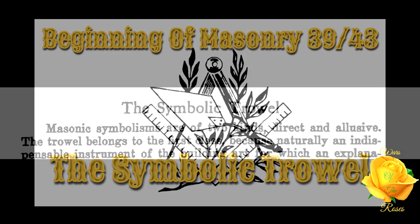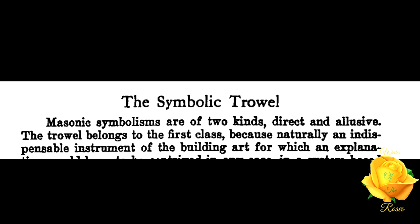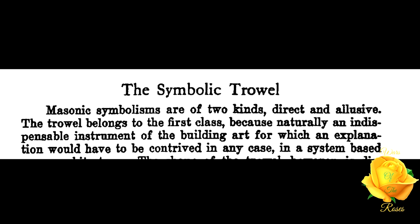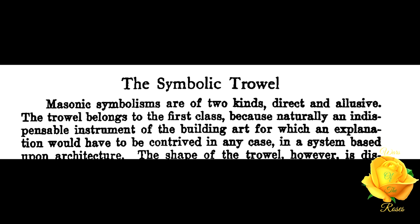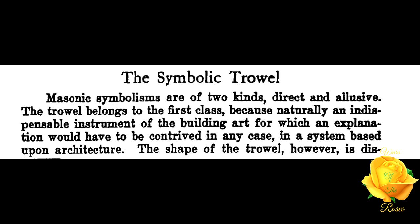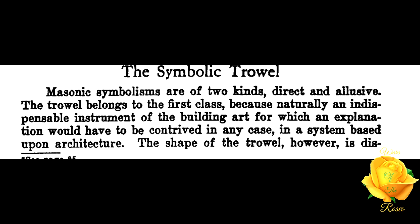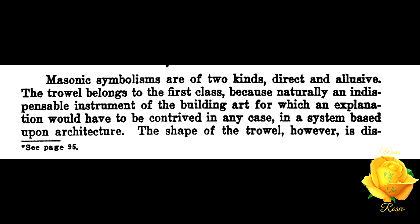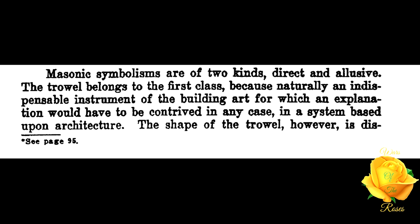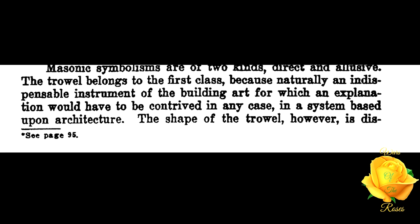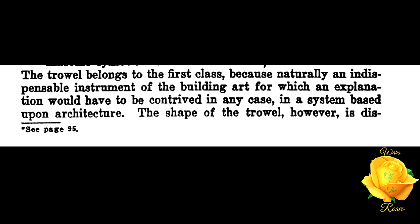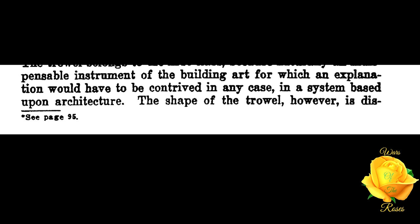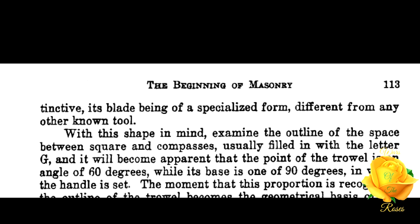The symbolic trowel: Masonic symbolisms are of two kinds — direct and elusive. The trowel belongs to the first class, because naturally it is an indispensable instrument of the building art, for which an explanation would have to be contrived in any case in a system based upon architecture.